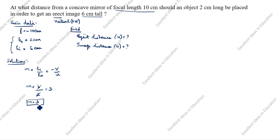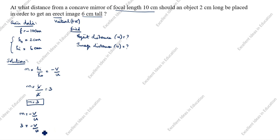Now we have m = 3. Using m = minus v / u: 3 = minus v / u, so 3u = minus v, therefore v = minus 3u. Now we have v in terms of u.